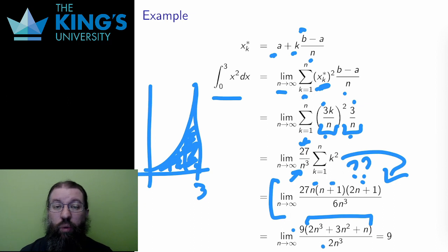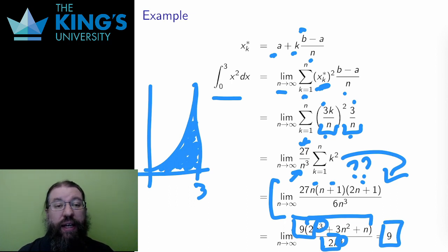The result is a limit where the order is n cubed in the numerator and n cubed in the denominator. These are the same, so I get the leading coefficients as the result of the limit. The top is 9 times 2 and the bottom is 2, so the ratio is just 9. I conclude that the area under the quadratic x squared between 0 and 3 is exactly 9 units of area.